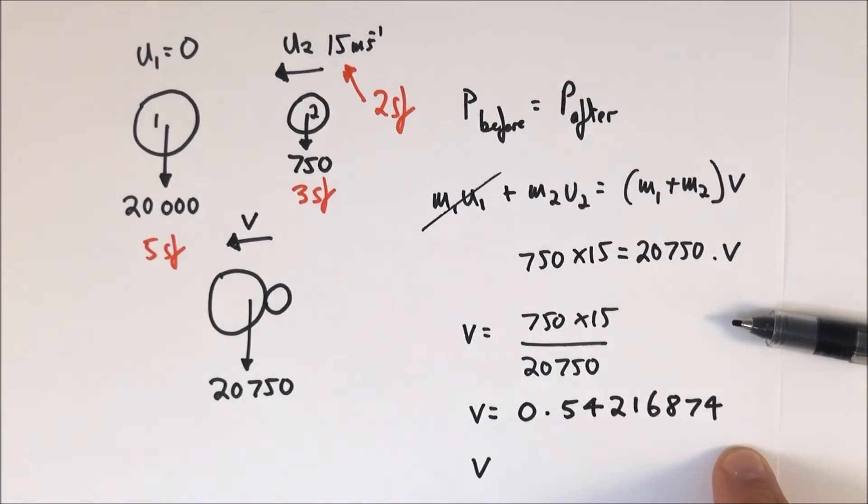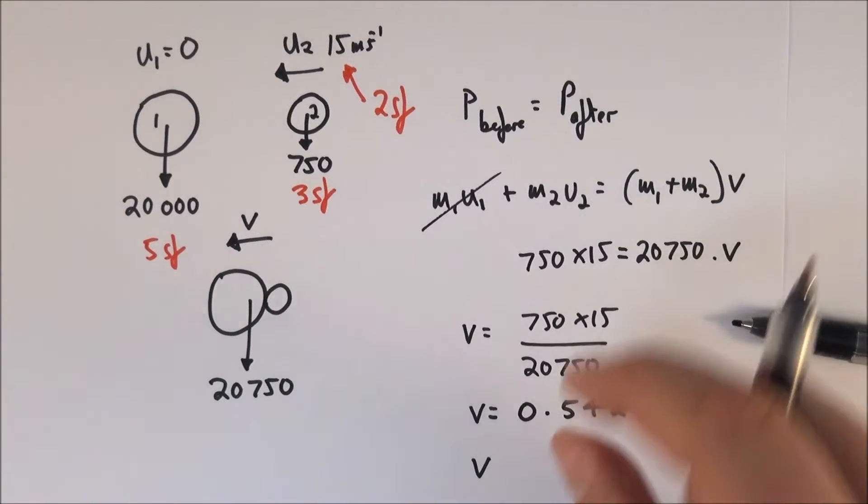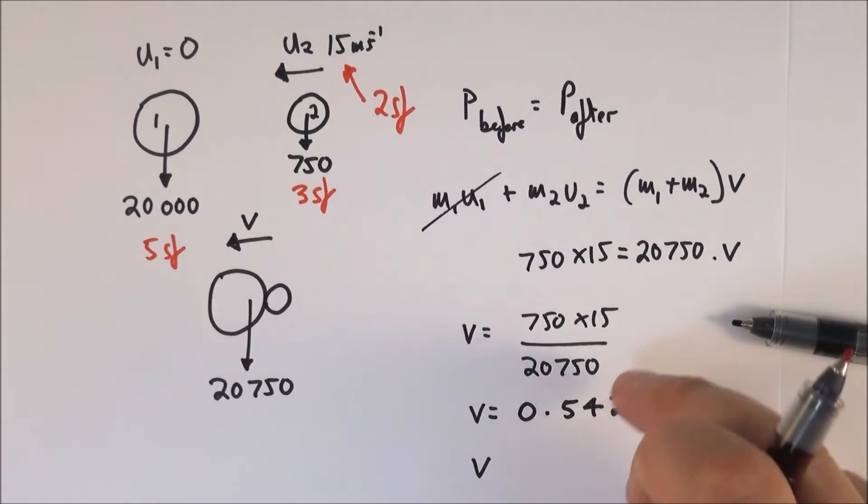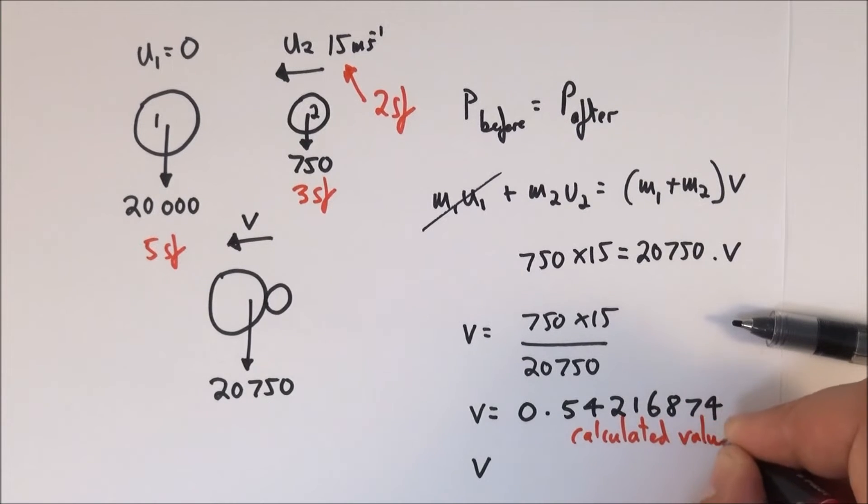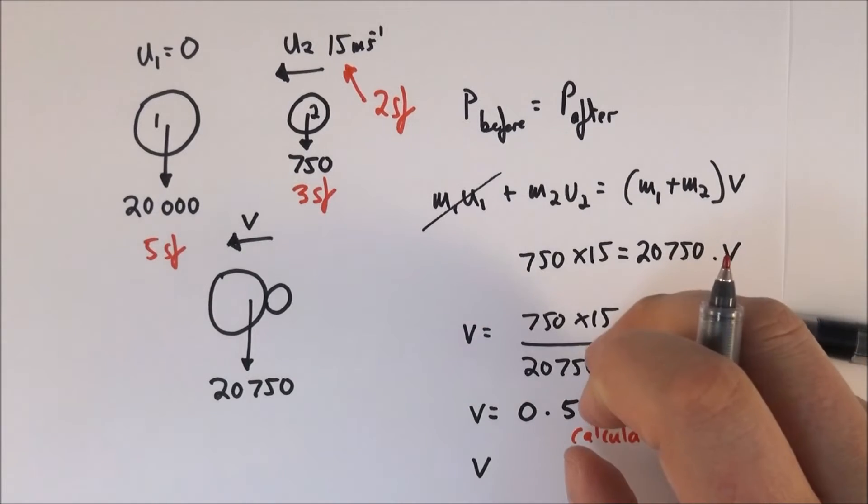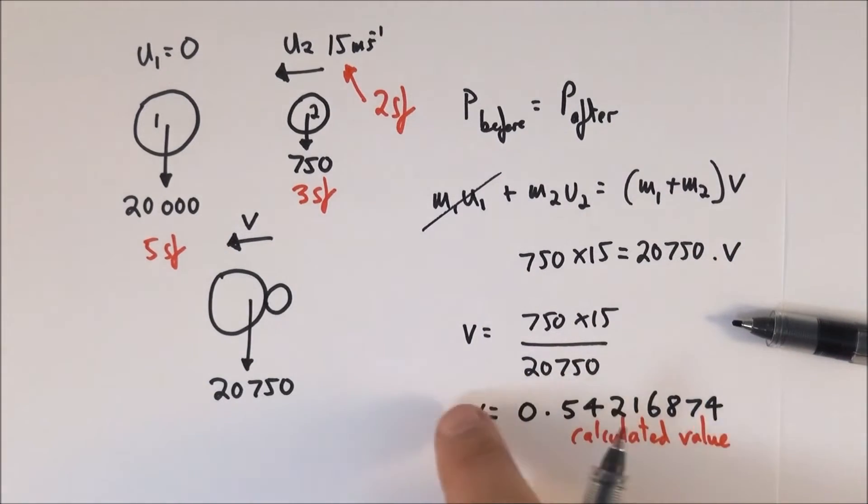So I've written down everything from my calculator and that's an important step. You should write down your full calculated value. Sometimes if you've got a subsequent calculation this is what you can use. So maybe store it in the memory of your calculator or write everything down. But we can only justifiably give our final answer to two significant figures.